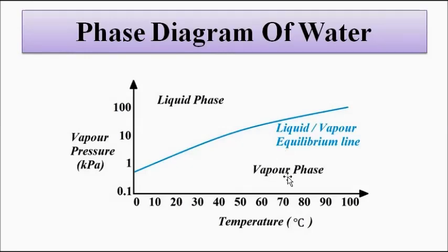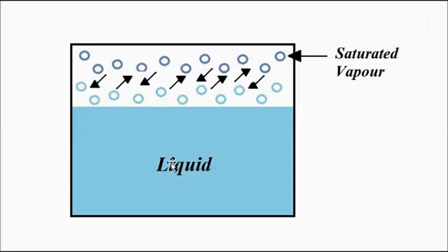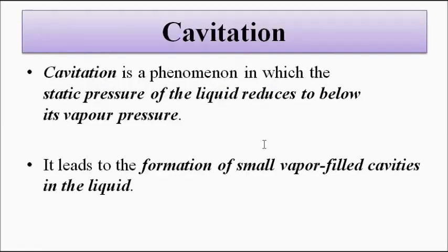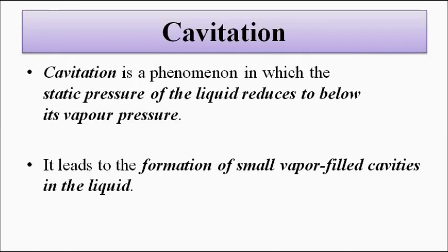The concept of vapor pressure is associated with another phenomenon called cavitation. Cavitation is a phenomenon in which the static pressure of the liquid reduces below its vapor pressure — below the saturation vapor pressure or the equilibrium condition vapor pressure we just discussed. When it reduces to below that, that phenomenon is called cavitation.